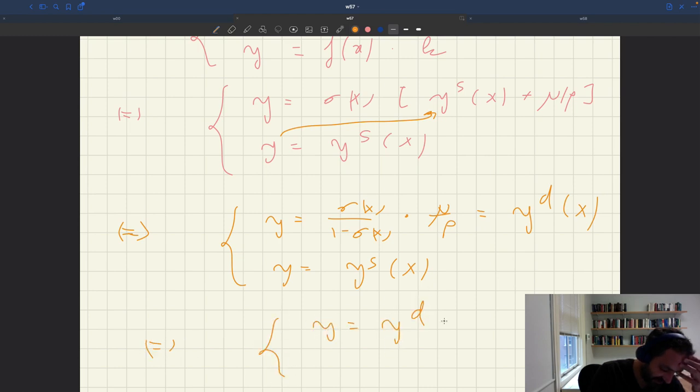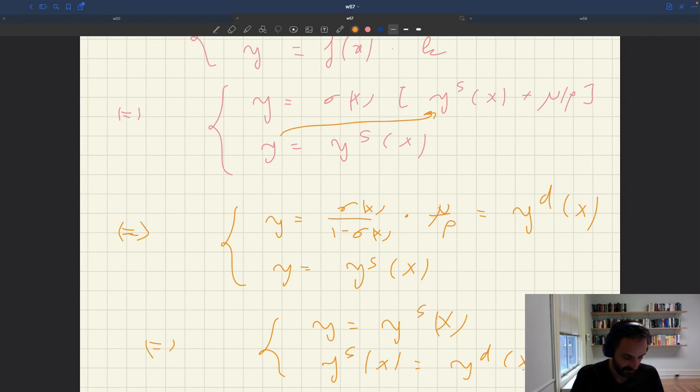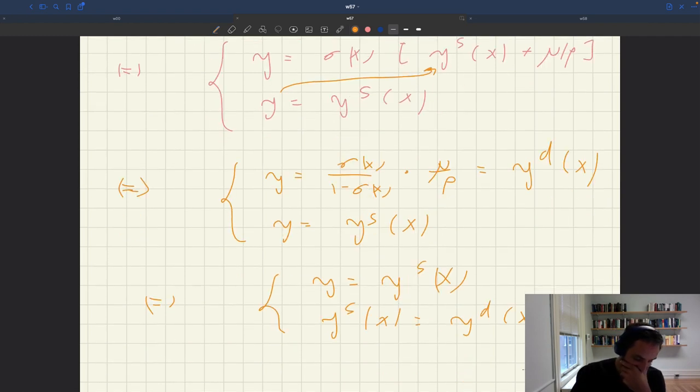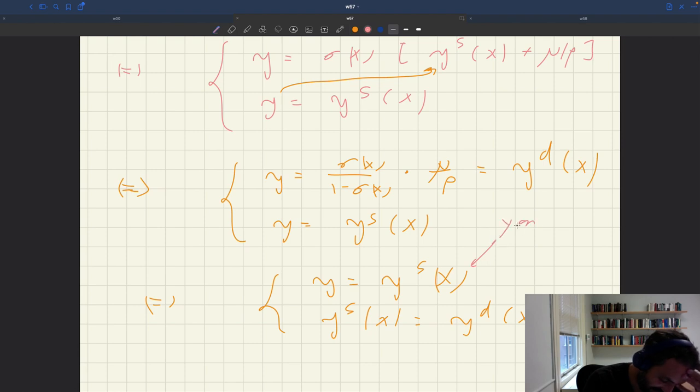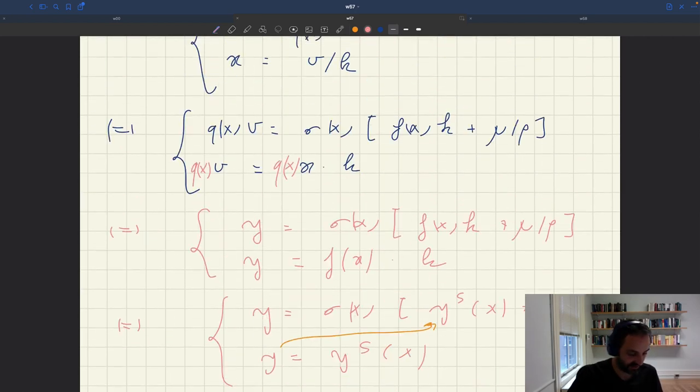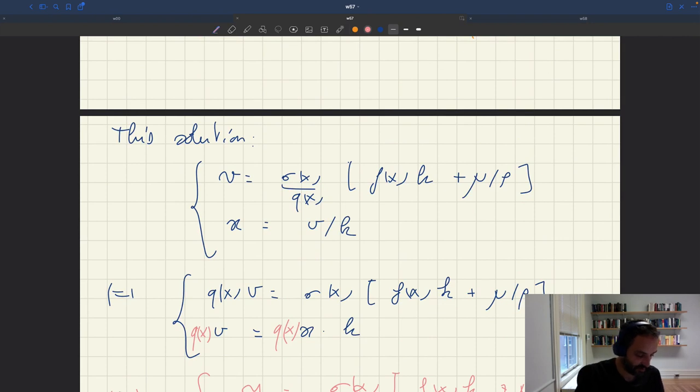So here you get the old solution concept. You get what we had before. Y is on the IS curve always, and then tightness equalizes YS and AD. This is our old solution concept: Y is on IS curve always, and tightness equalizes YS and AD.